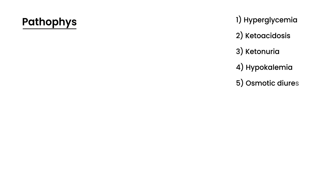The first is the concept of hyperglycemia. The second is that in DKA you have something called ketoacidosis, which is part of the word diabetic ketoacidosis. The next thing is ketonuria — increased ketones in the urine. Number 4 is hypokalemia, decreased potassium in the blood. And finally, osmotic diuresis. These are all components of DKA.